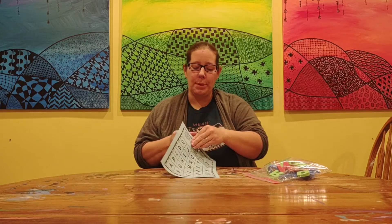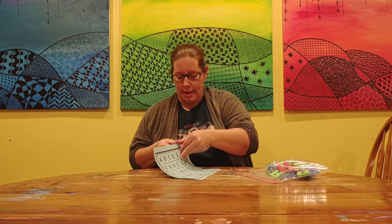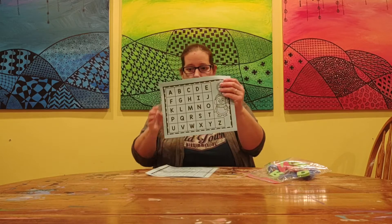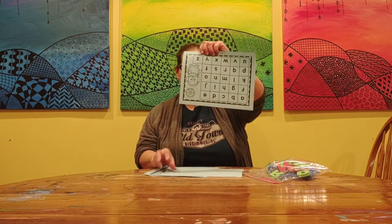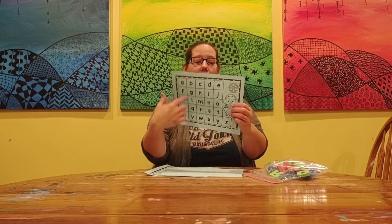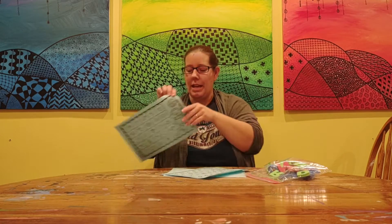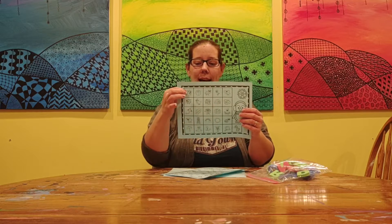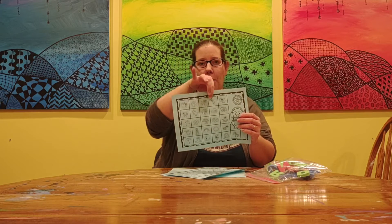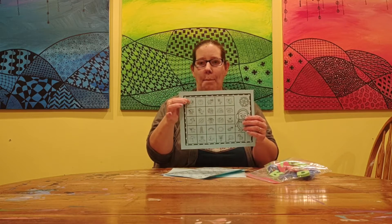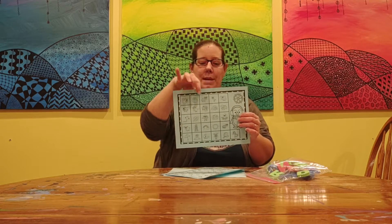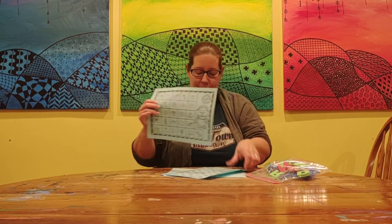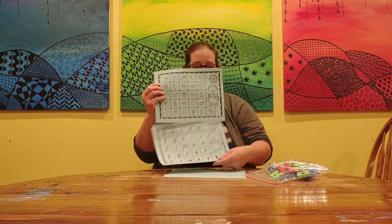You have three blue papers. One has capital letters on it. One has lowercase letters on it. One has letter sounds on it — it has things that start with all the different letters, like apple starts with A and ball starts with B and cow starts with C, and they go in the same order.